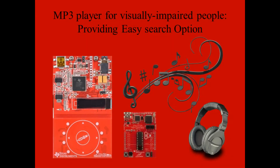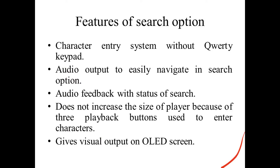MP3 player for visually impaired people, providing easy search options. On the left side we have the audio booster pack by Texas Instruments and there is the launch pad with features of search options. As the visually impaired cannot use the query keypad easily, we are providing a character entry system without a query keypad. There is an audio output to easily navigate inside the search option. It doesn't increase the size of the player because we are not using the query keypad, and it also gives the visual output on the OLED screen.